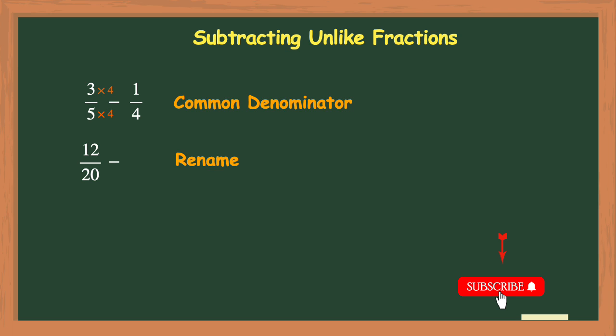Now let's take a look at the second fraction of 1 fourth. I will need to multiply that denominator of 4 by 5 to again get our common denominator of 20. And I will multiply the numerator by 5 as well. So 1 fourth will be renamed to its equivalent of 5 20ths.